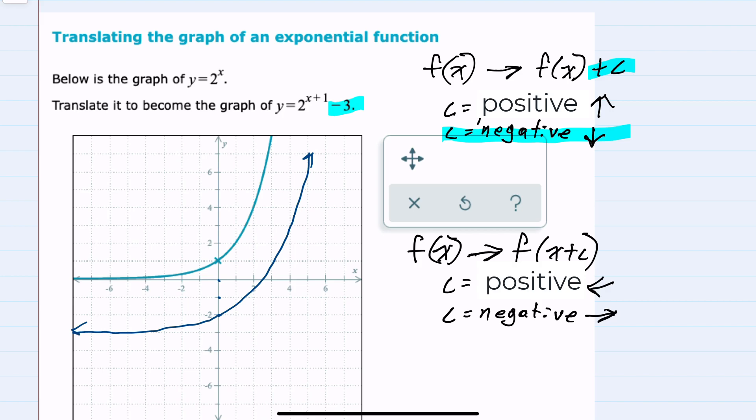However, there's also this x plus 1, which has the effect of replacing x with x plus 1. And since that value is positive, this would shift our graph to the left 1 unit. So we've already moved this value down 3. We must now move it to the left 1.